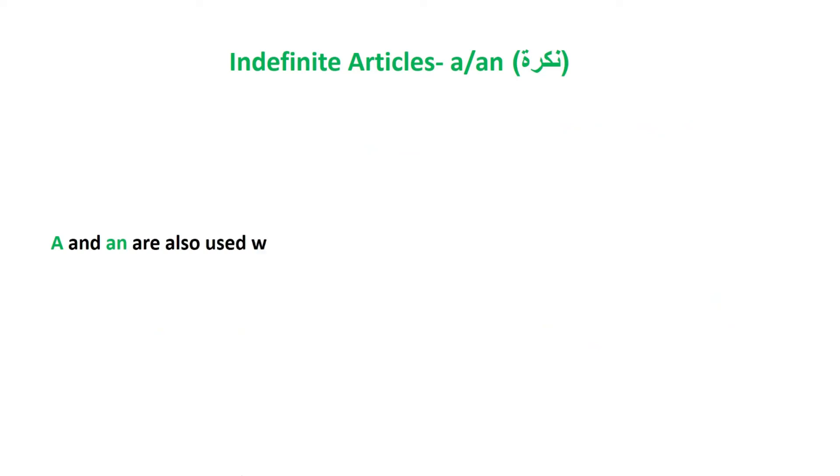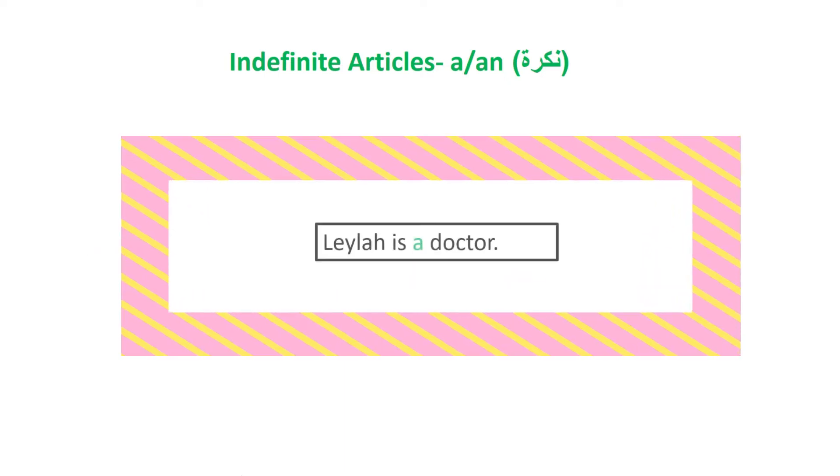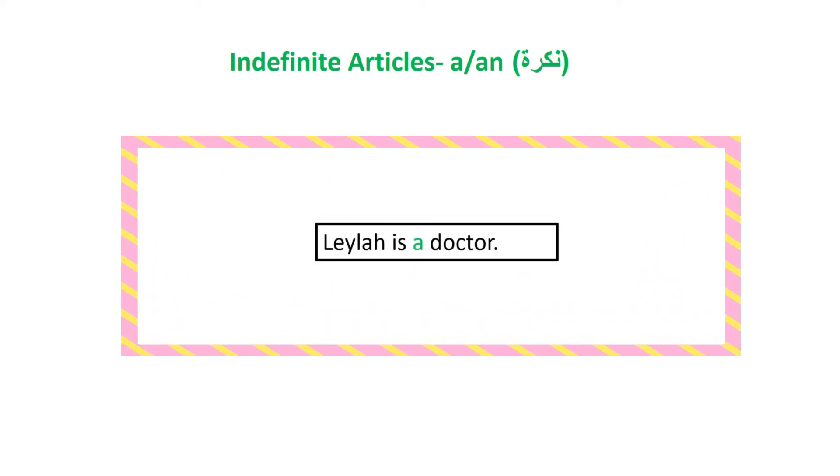A and an are also used when talking about your profession or job. For example, we say 'Leila is a doctor' or 'I am an engineer.' The indefinite article is used when talking about one's profession.